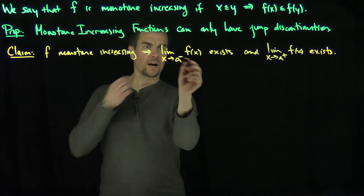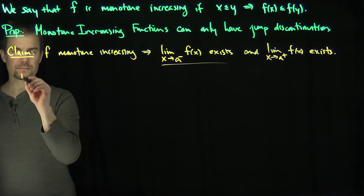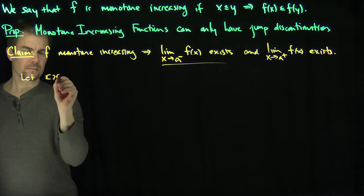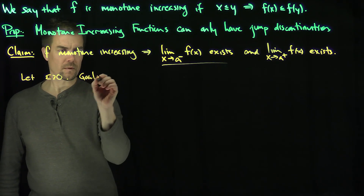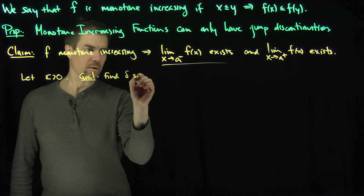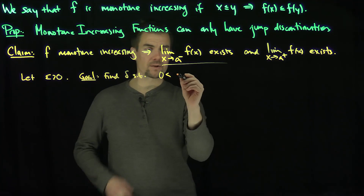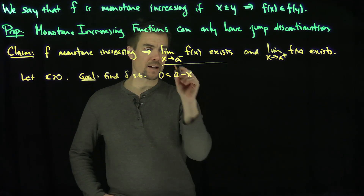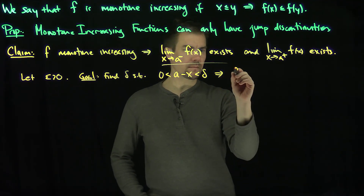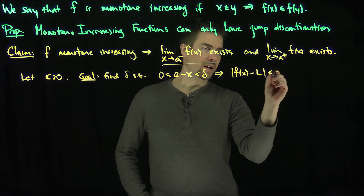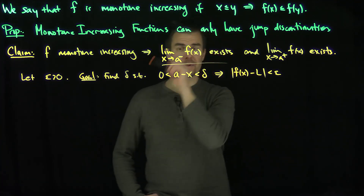We can do either one — this one is going to be a little bit easier, so let's do that one first. Let epsilon be greater than zero. Our goal is to find delta such that zero less than a minus x less than delta implies that the absolute value of f of x minus some l is less than epsilon. That's our goal — that would show that we have found the limit from the left.